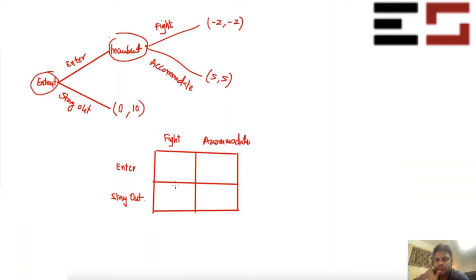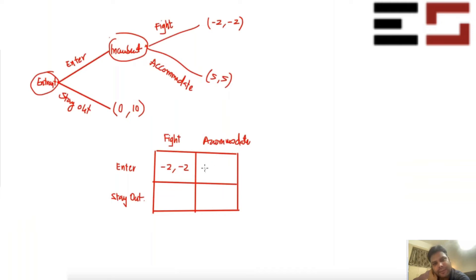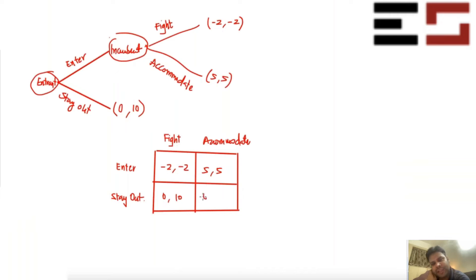Now you have the table and can figure out the Nash equilibrium. If the game is played as enter-fight, the payoffs are minus 2, minus 2. Enter-accommodate gives 5, 5. Stay out-fight gives 0, 10. Stay out-accommodate gives 0, 10. Let's figure out the Nash equilibrium.